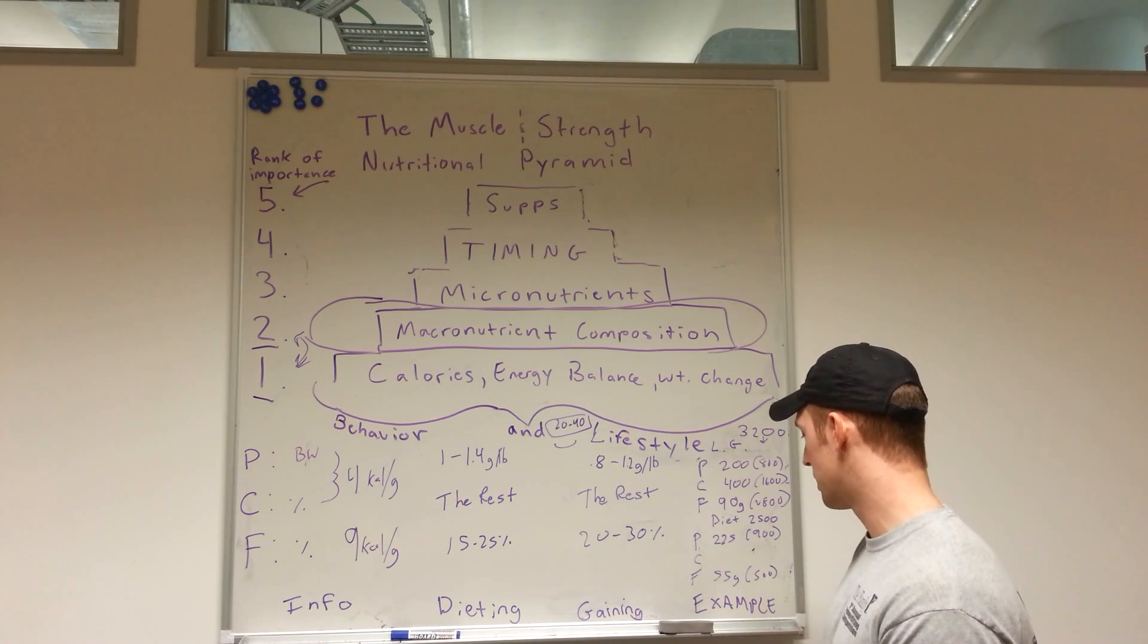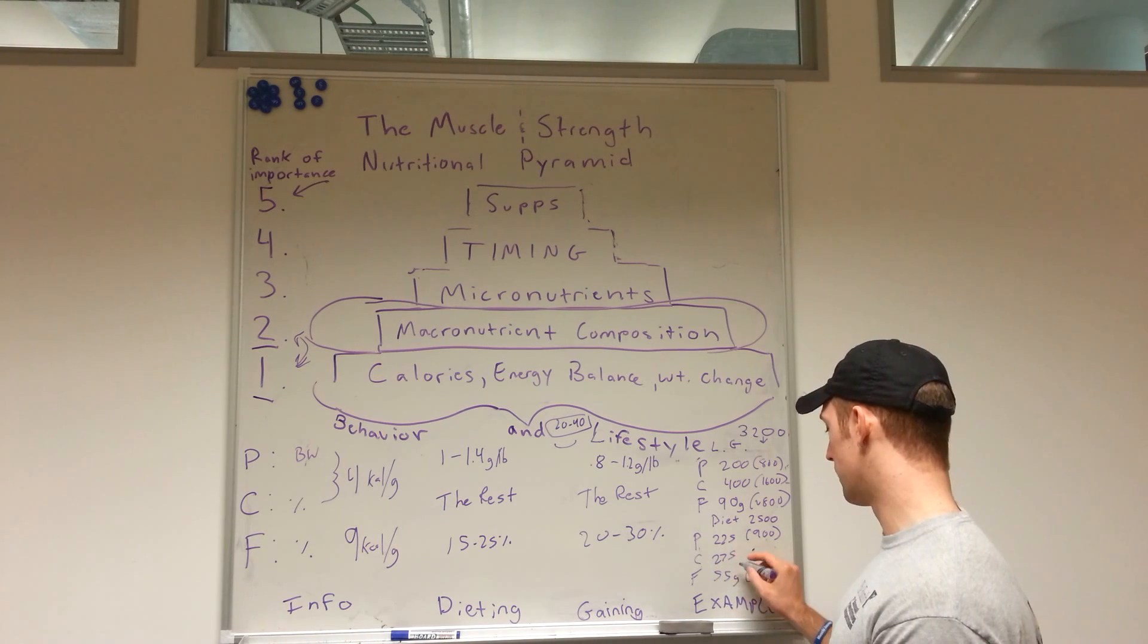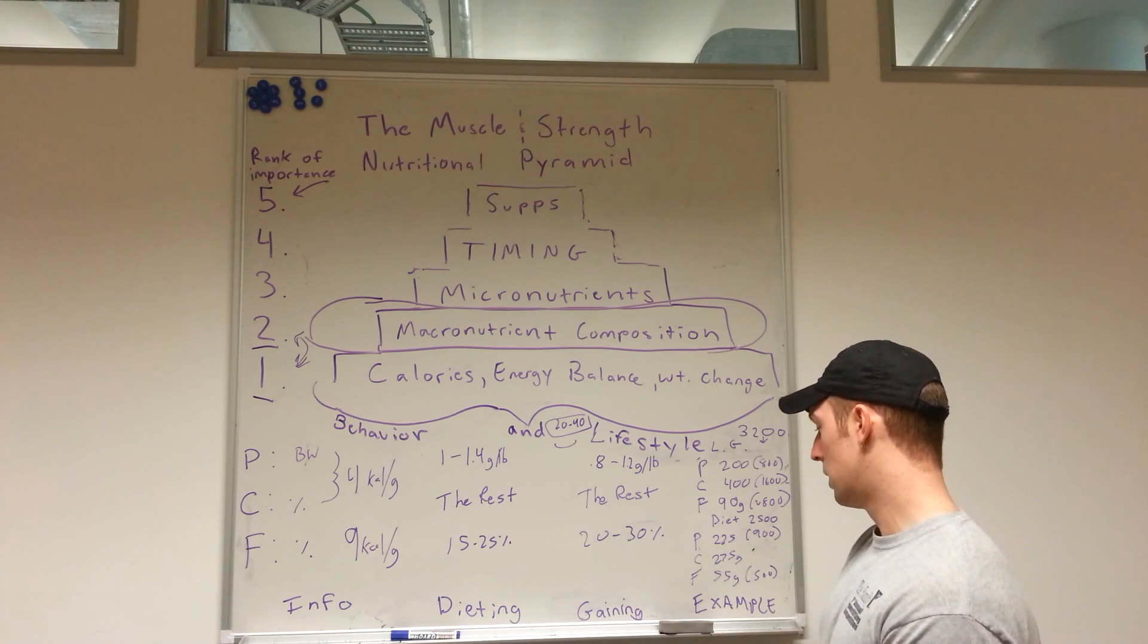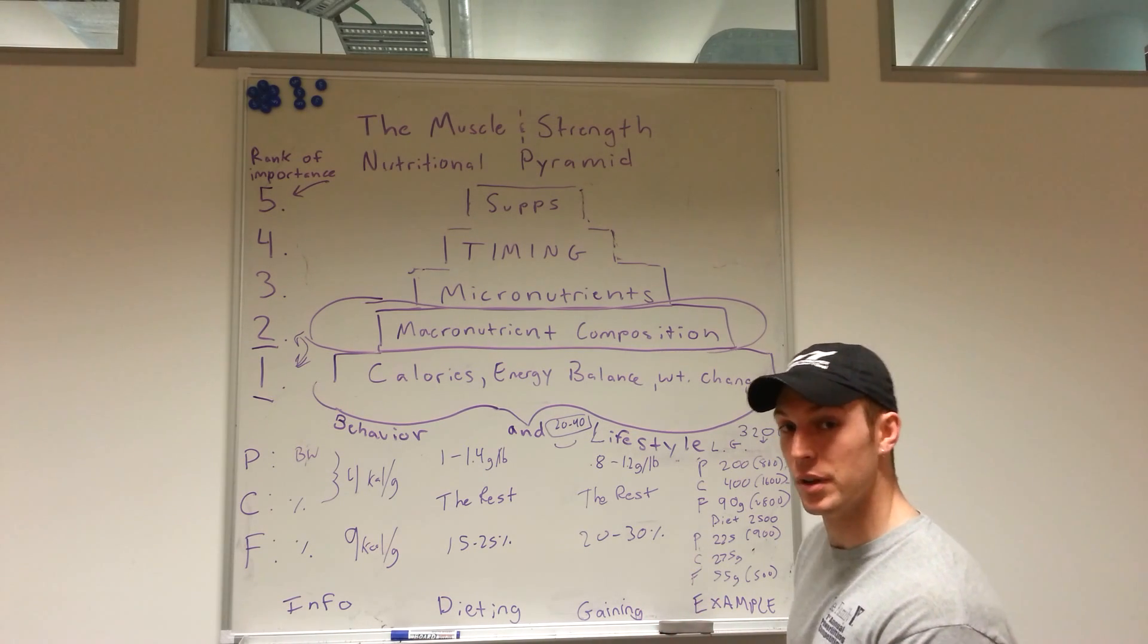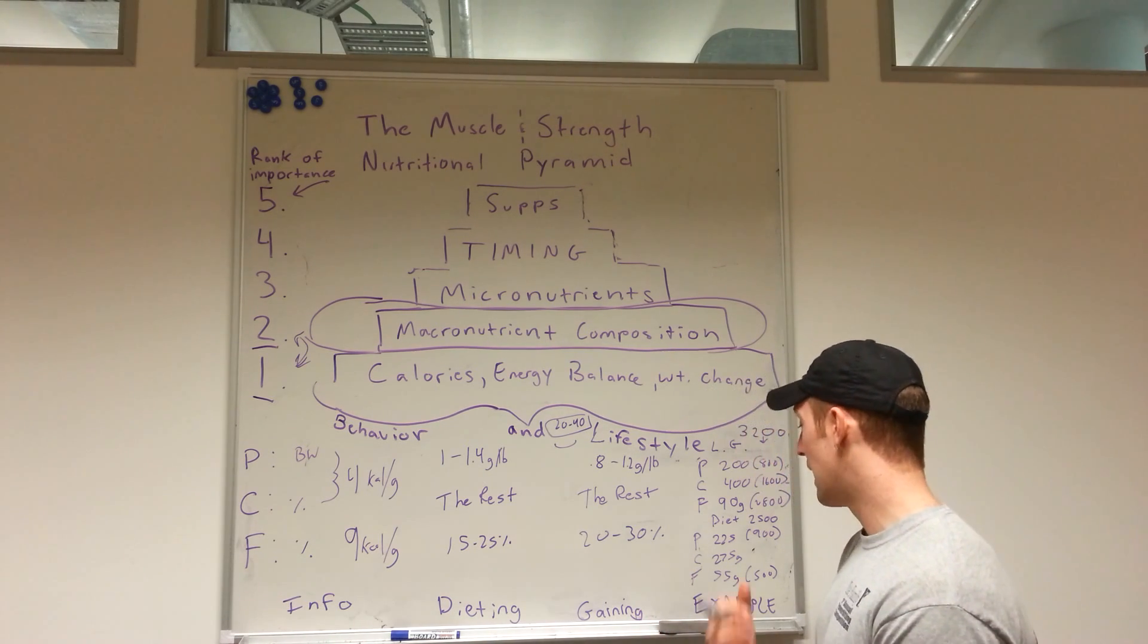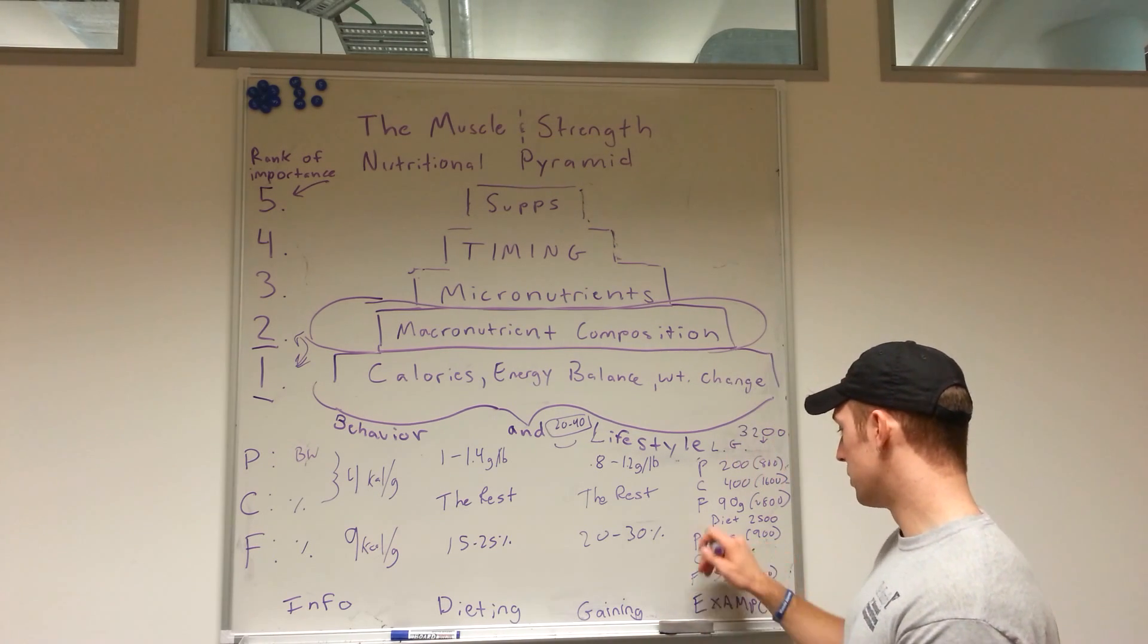And we have 1,100 calories for carbs, and then boom, we got 275 grams of carbs. So we've got enough carbs to satisfy training needs, enough fat to not lose our mind and maintain some semblance of a normal hormonal pattern, and enough protein to protect against lean body mass losses. And that is how you might do it.